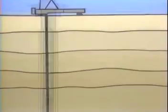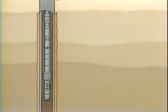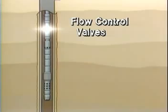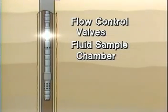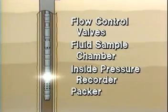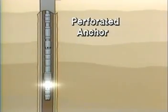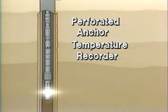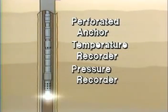In their simplest form, the drill stem test tools run on either drill pipe or tubing, consist of flow control valves, a fluid sample chamber, an inside pressure recorder, one or more packers to isolate the zone being tested, a perforated anchor for fluid to enter the tool string, a temperature recorder, and a pressure recorder.